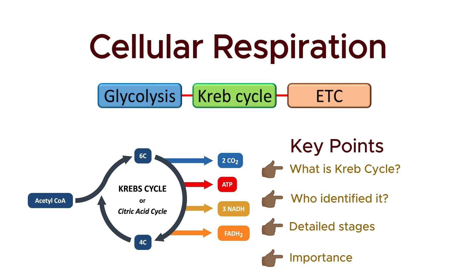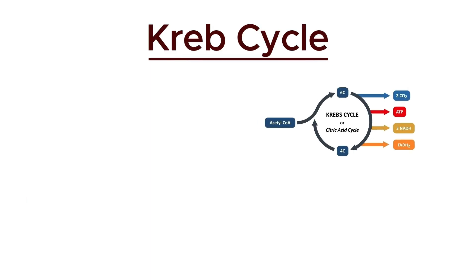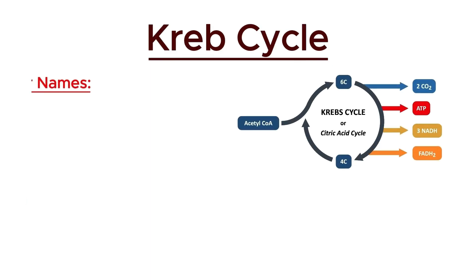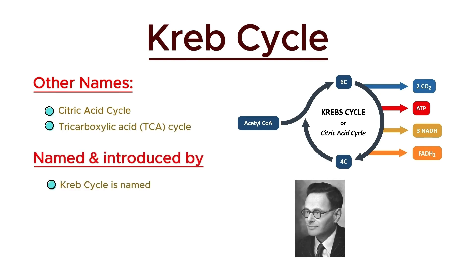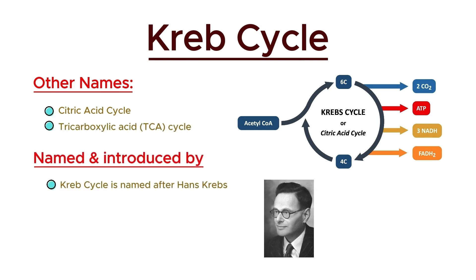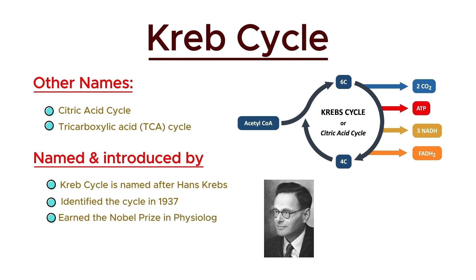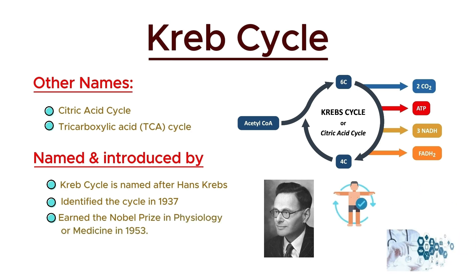The Krebs cycle, also known as the citric acid cycle or the tricarboxylic acid cycle, is named after Hans Krebs, who identified its steps in the 1930s. Hans Krebs first identified the cycle in 1937, earning the Nobel Prize in Physiology or Medicine in 1953.